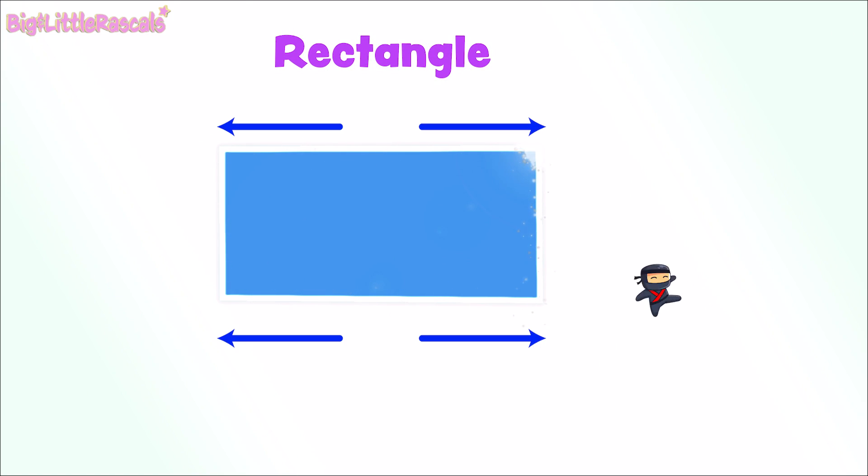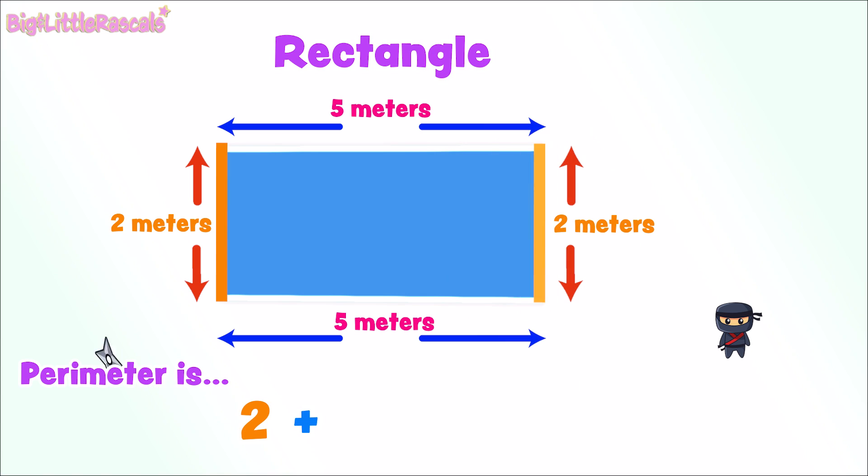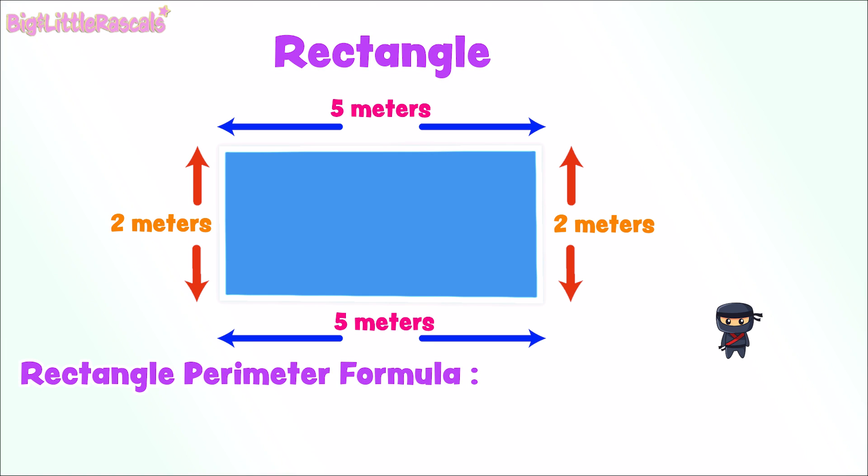But how about this shape? It's a rectangle! Rectangle also has 4 sides, but only the opposite sides are equal length. So this rectangle's perimeter is 2 plus 2 plus 5 plus 5 equals to 14 meters. Or, when we put into the rectangle's perimeter formula is 2 multiplied by its length plus 2 multiplied by its width, or its length plus its width then we multiplied by 2 equals to 2 plus 5 equals to 7 and multiplied by 2. So, it equals to 14 meters. Great work!